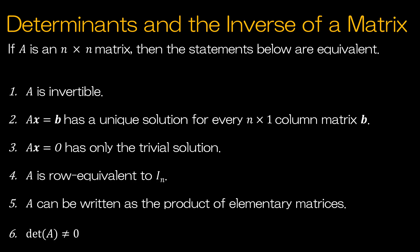This is another one of those keepsake slides that tell you all of the things that are the same. So if A is invertible, that means AX equals B has a unique solution for every n by 1 column matrix B. AX equals 0 has only the trivial solution. A is row equivalent to the identity of n, which means if A is 2 by 2, it's equivalent to the identity of 2 by 2 matrix. A can be written as the product of elementary matrices, and the determinant of A is not equal to 0.